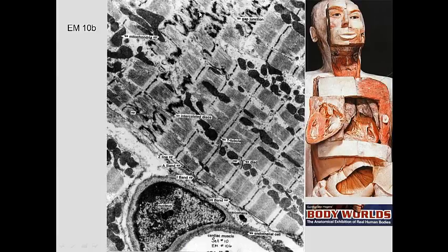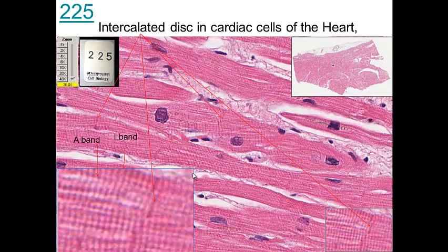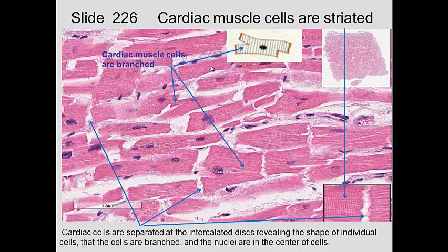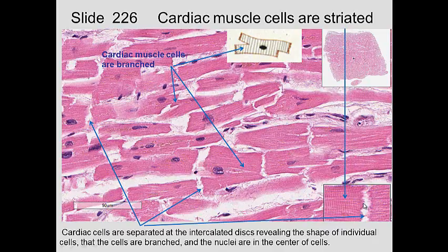At the electron microscopic level, the intercalated disc is visible. Cardiac muscle is striated with A and I bands, and the sarcomere goes from one Z-disc to another. Intercalated discs are visible here and here in addition to the A and I banding. In some specimens, the cells have broken apart at the intercalated disc. But we can see that cardiac muscle cells are branched and attached to more than one cell, with a little darkness at the intercalated disc visible.